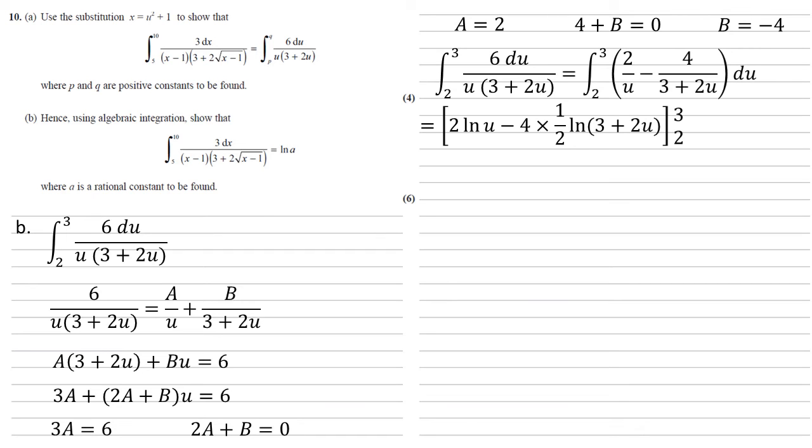The right-hand one's a little bit trickier, but just remember with our rule, the bit inside the ln stays the same, so we've got ln 3 plus 2u. If we were to differentiate that back, the 2 in front of the u would come out to multiply it by, so we've got a half at the beginning to cancel that out, and the 4 is still there from the numerator. Simplifying this gives us 2 ln u minus 2 ln 3 plus 2u, and our bounds are still 2 and 3.